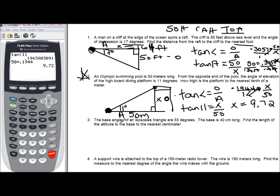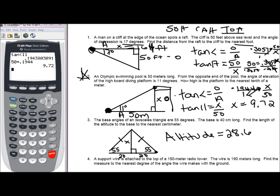Number three does not have an angle of elevation or depression — it's an isosceles triangle with base angles of 55 degrees and an altitude. The altitude in an isosceles triangle bisects the opposite side, so the base of 40 is split into 20 and 20. The altitude x is the perpendicular side, and using trig we get approximately 28.6.